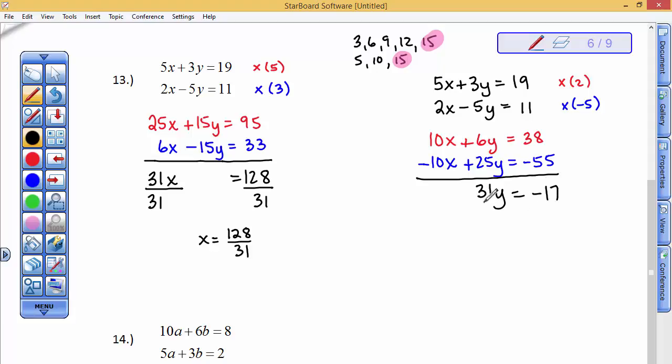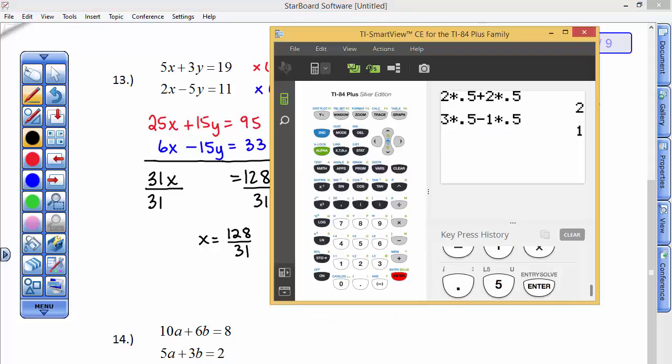My ordered pair is 128 over 31 and a negative 17 over 31. And I'm going to see if I can grab my calculator here. And I'm going to have to just remember the other fraction. So, right here, I'm going to go 5 times 128 divided by 31. And then, plus 3 times, and y was a negative 17 divided by 31. I'm cheating, you know. I just don't want to deal with the fractions. And I want to know if that equals 19.